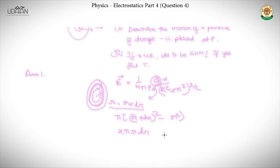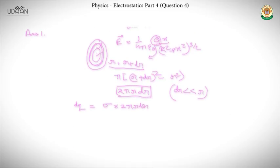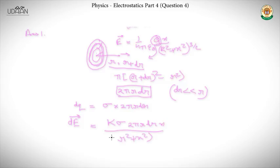Taking dr much much less than r, the area of the small ring is 2π·r·dr. So dq = sigma · 2π·r·dr. Therefore the small dE, directed along the axis by symmetry, equals k · sigma · 2π·r·dr · x divided by (r² + x²)^(3/2).